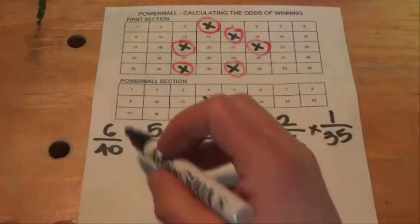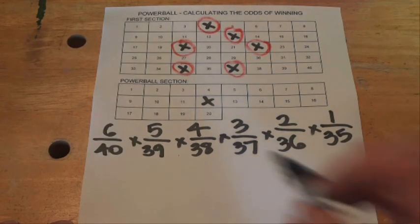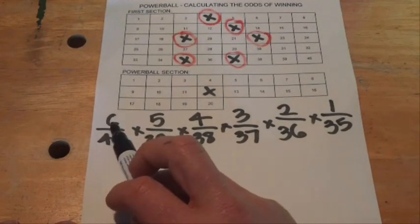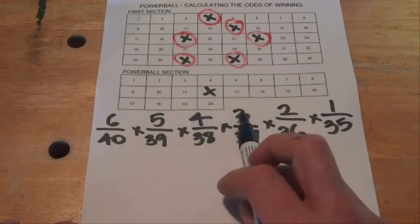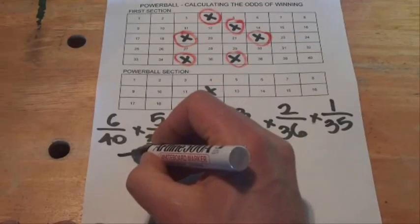So you'll notice as I've been writing those fractions down, I've written multiply between each of those six fractions, so what we need to do is multiply them out now: six times five times four times three times two times one, which gives us 720.